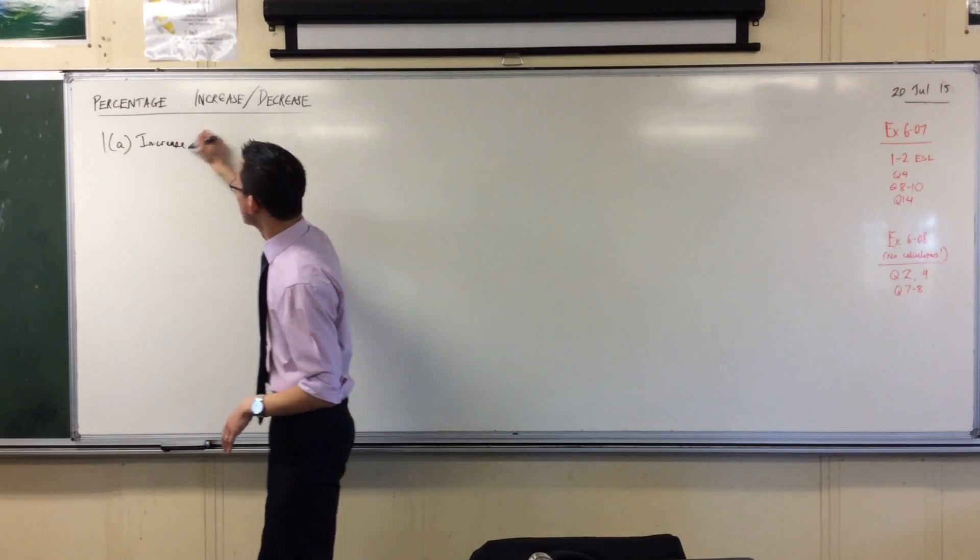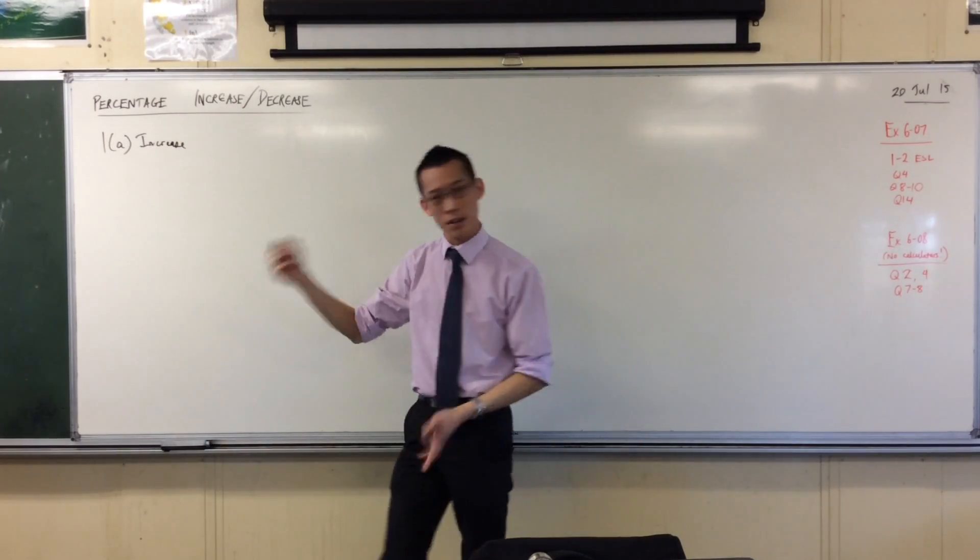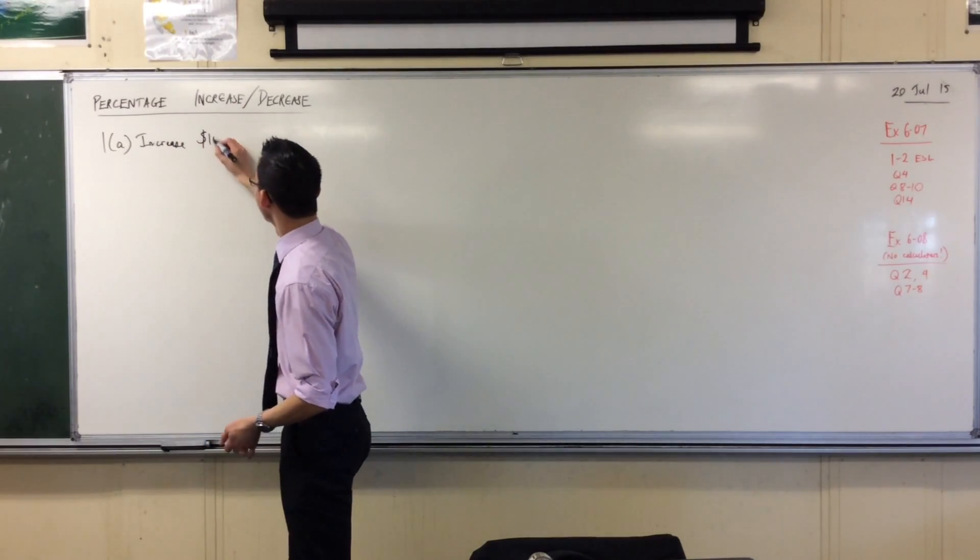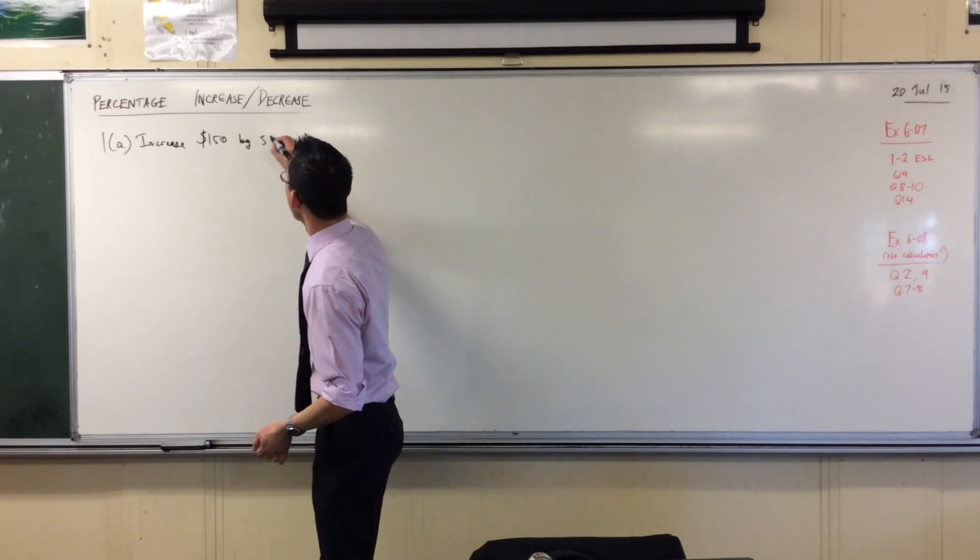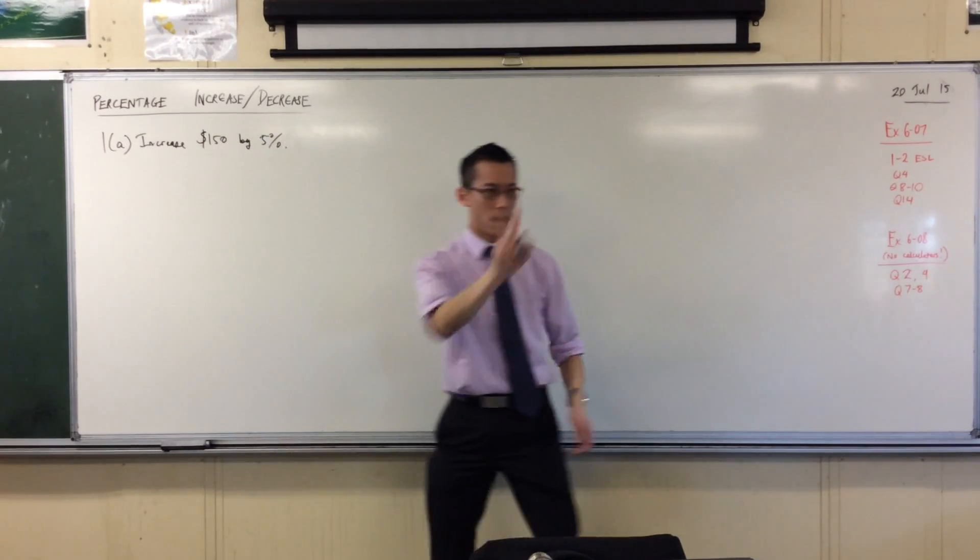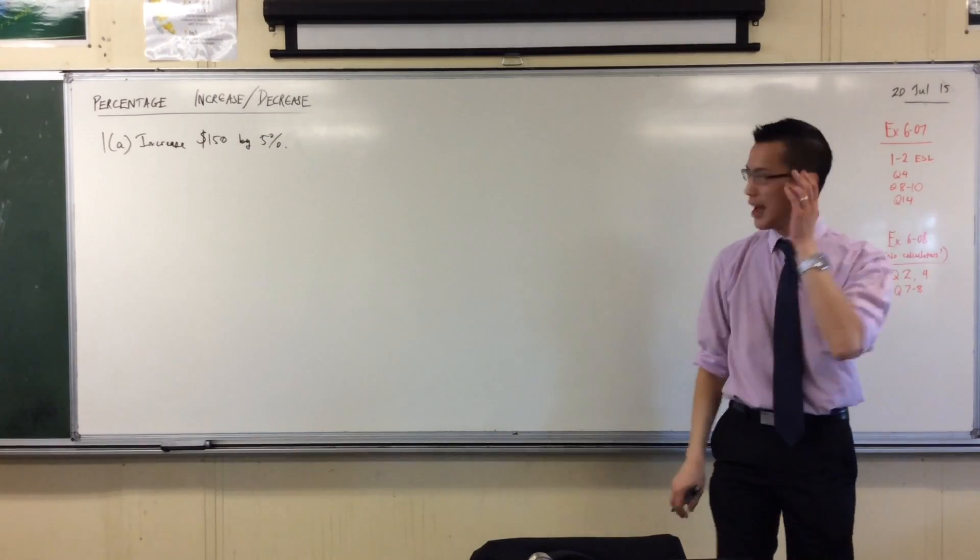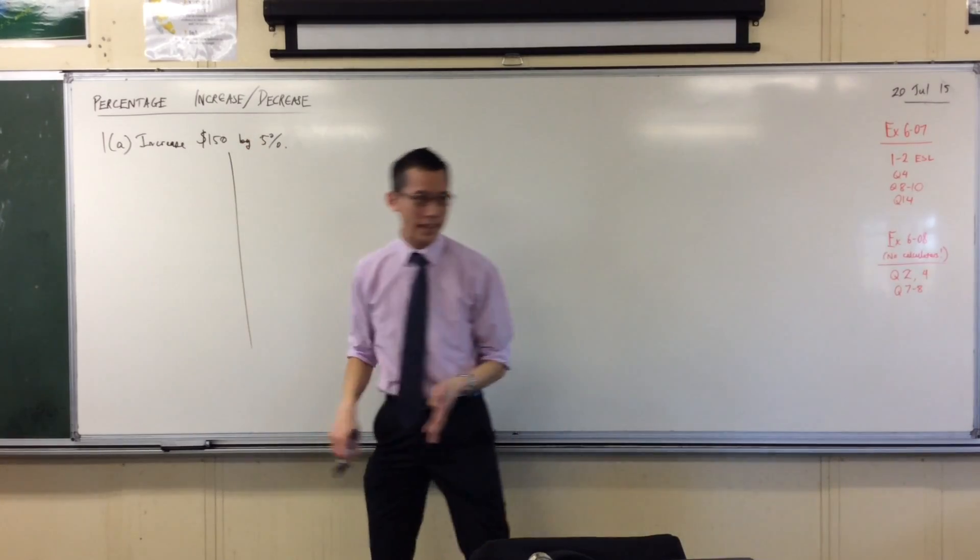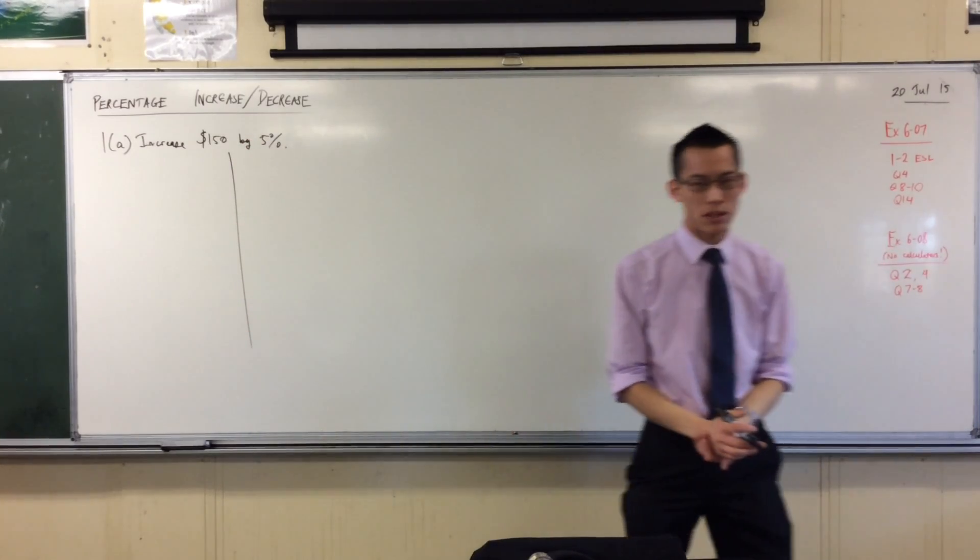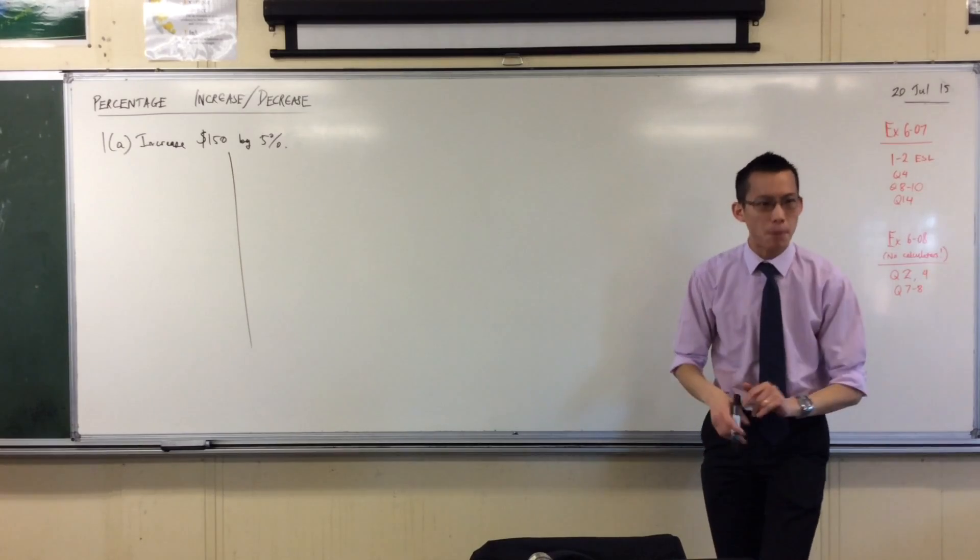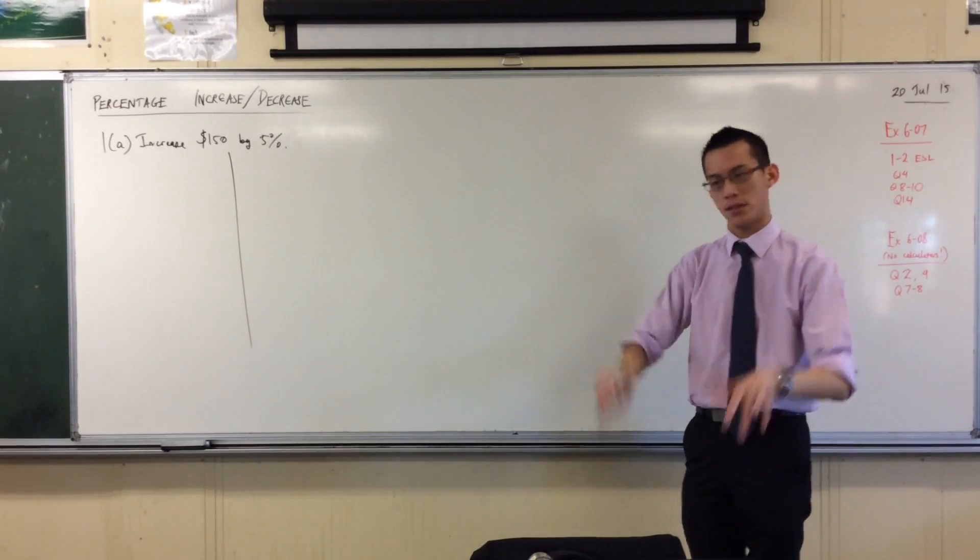The 1A question is, I'll just jot down the question because you might not have it in front of you right now. It's increase $150 by 5%. I'm going to teach you two ways to do this. I'd like you to get down both ways of working out and then you can choose which one you prefer, but you really should know how both of them work.